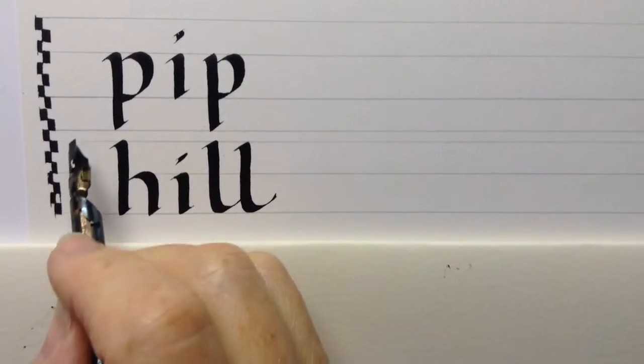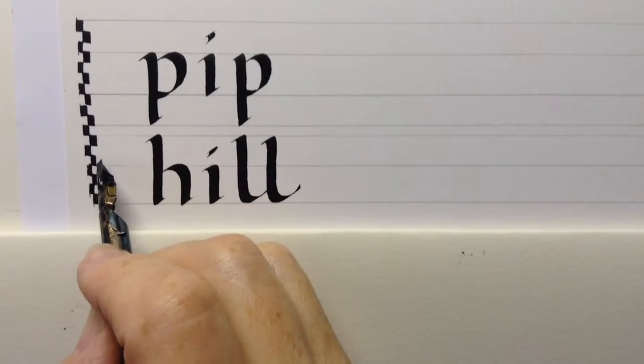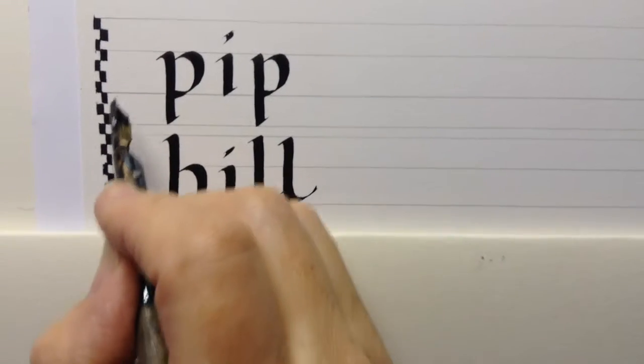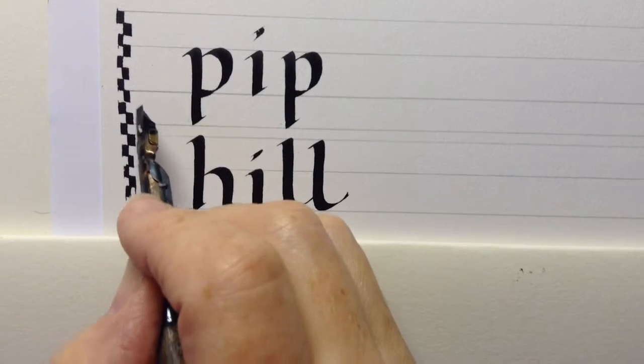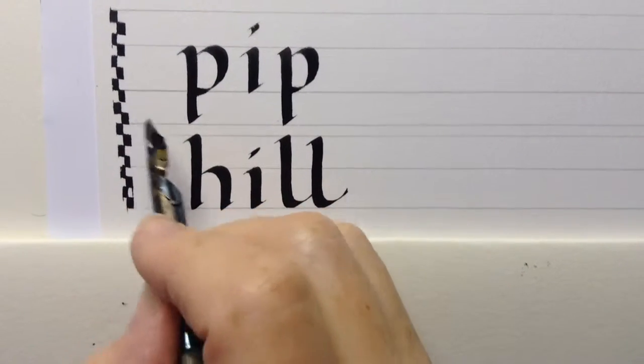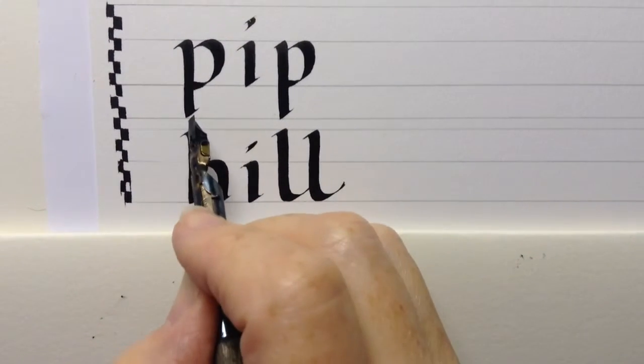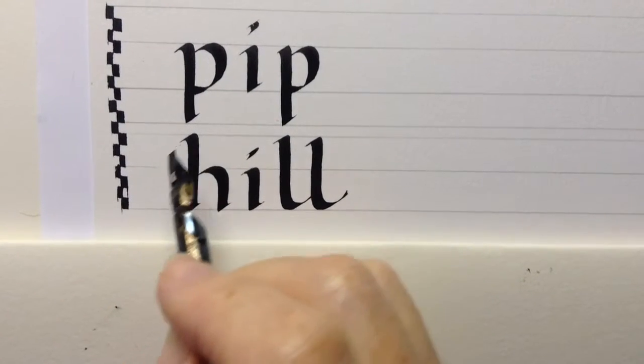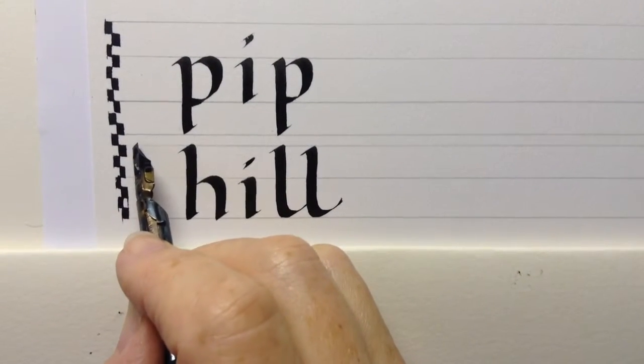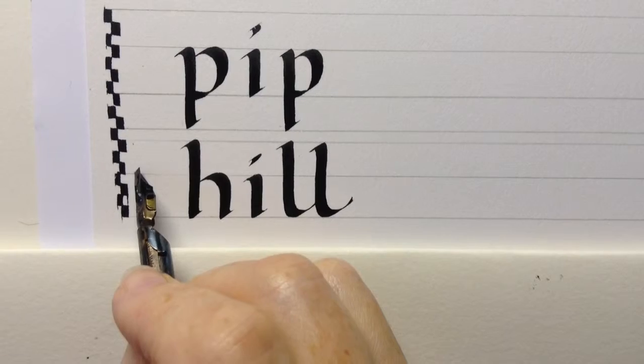I need to ensure that the first stroke of the letter H and those L's don't clash. So generally speaking, between lines, you should leave the amount of the ascenders, so in this case of foundation or round hand, that's three nib widths. Leave an extra nib width just in case the two letters come exactly one under the other.